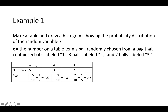The total number of outcomes is 5 + 3 + 2 = 10. So 5 out of 10 outcomes result in a ball labeled 1, which reduces to 1/2 or 0.5. There are 3 outcomes with a ball labeled 2 out of 10 total, so that's 0.3. And there are 2 outcomes out of 10 with a ball labeled 3, which reduces to 1/5 or 0.2. Notice that just like the die example, adding the probabilities 0.5 + 0.3 + 0.2 gives 1.